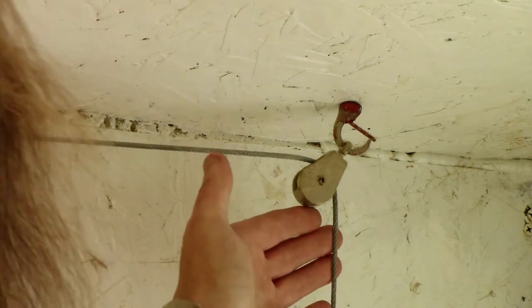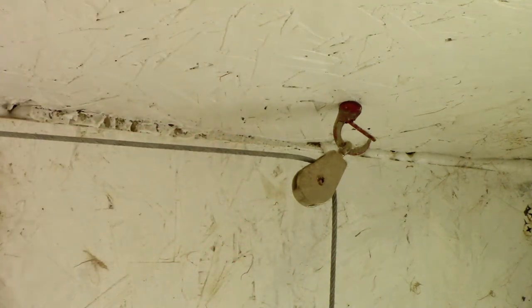So the cable goes from the door up to a pulley that's attached to the ceiling and across. And that cable then goes over to a linear actuator.